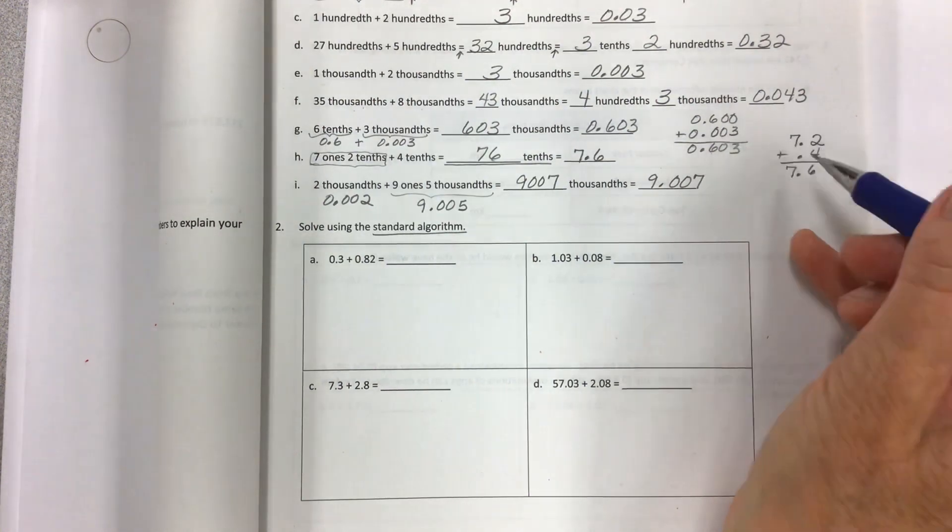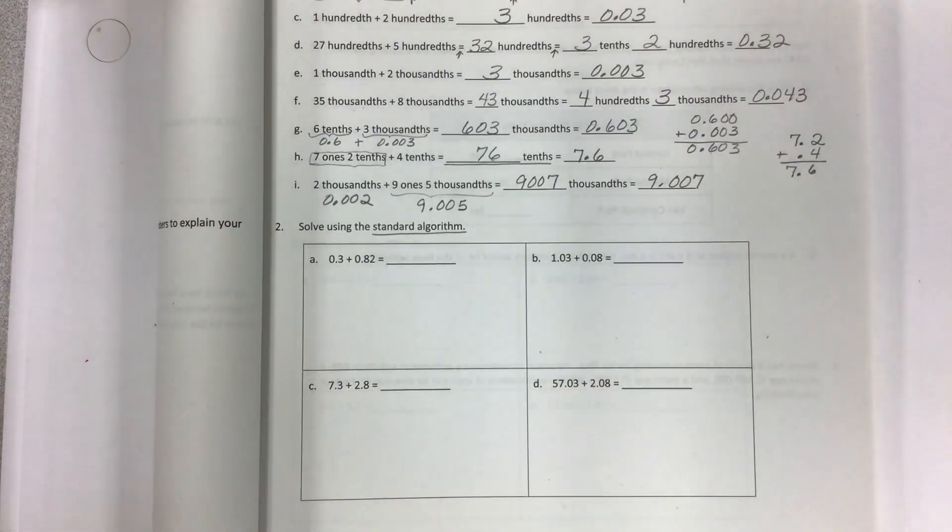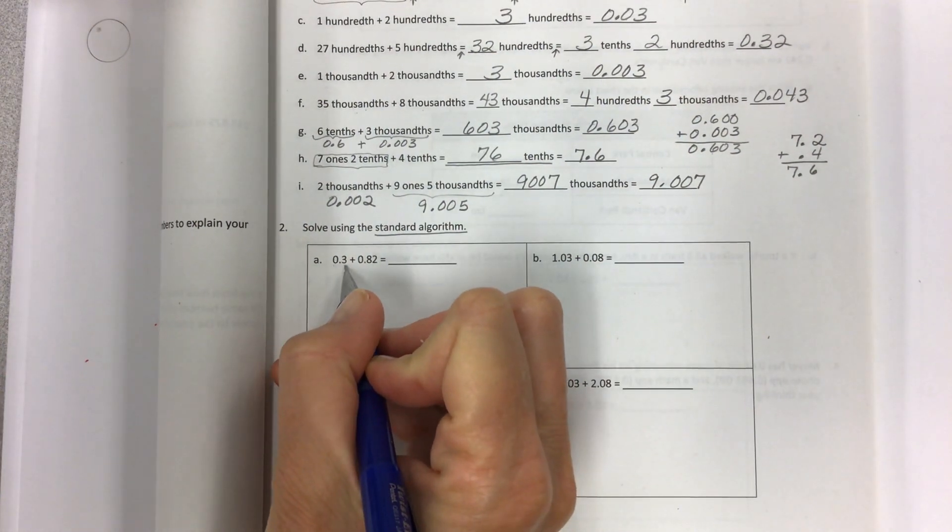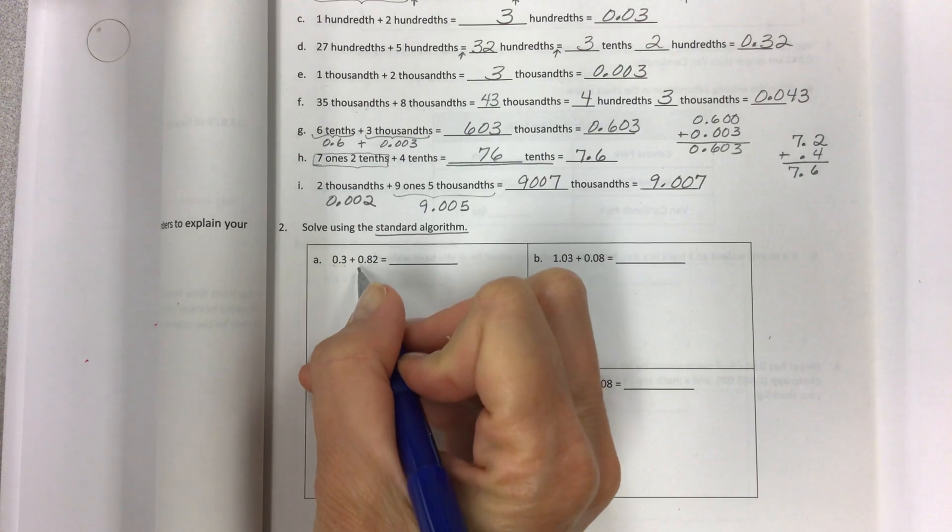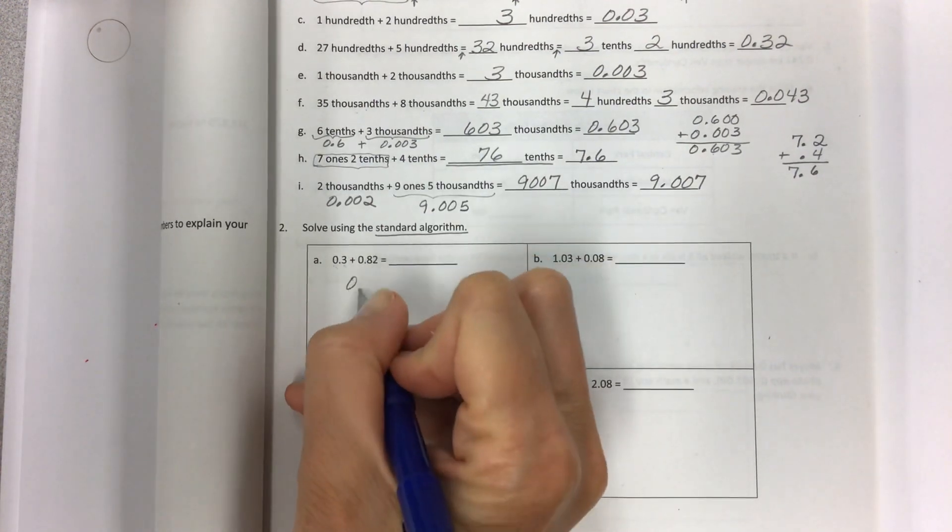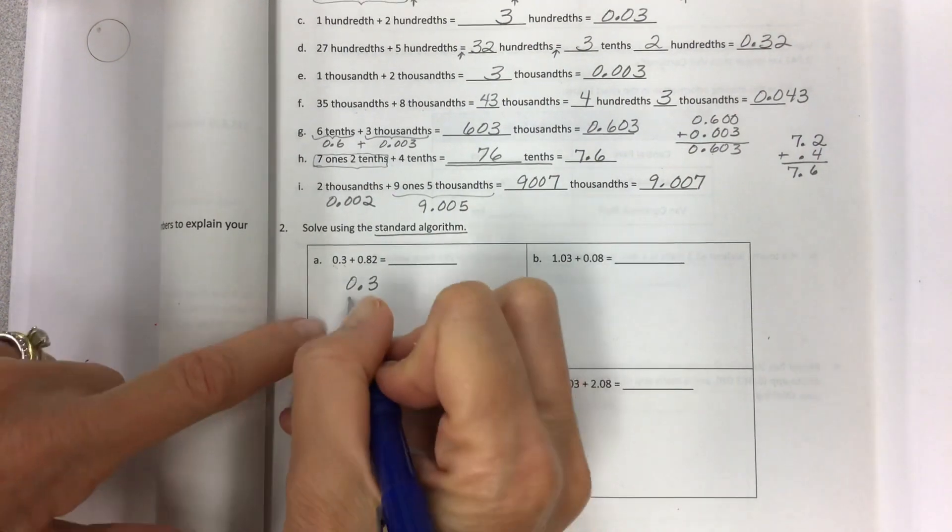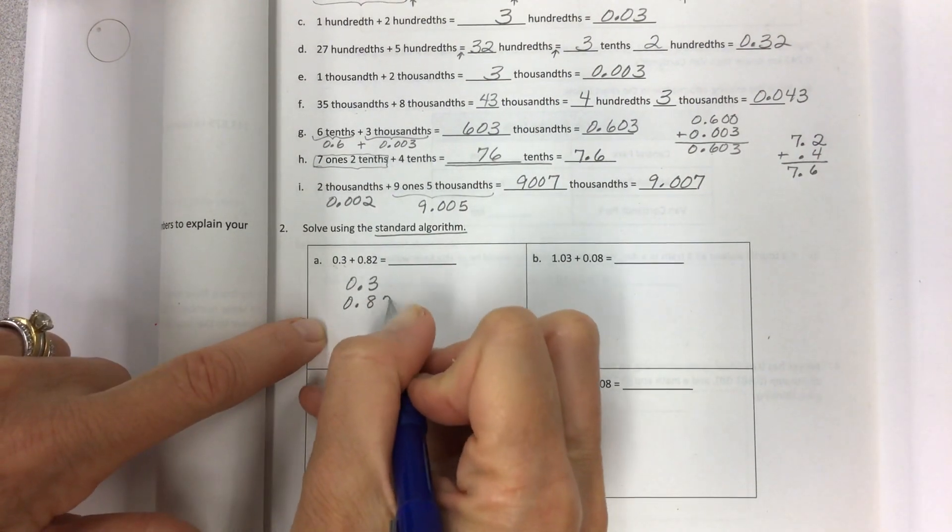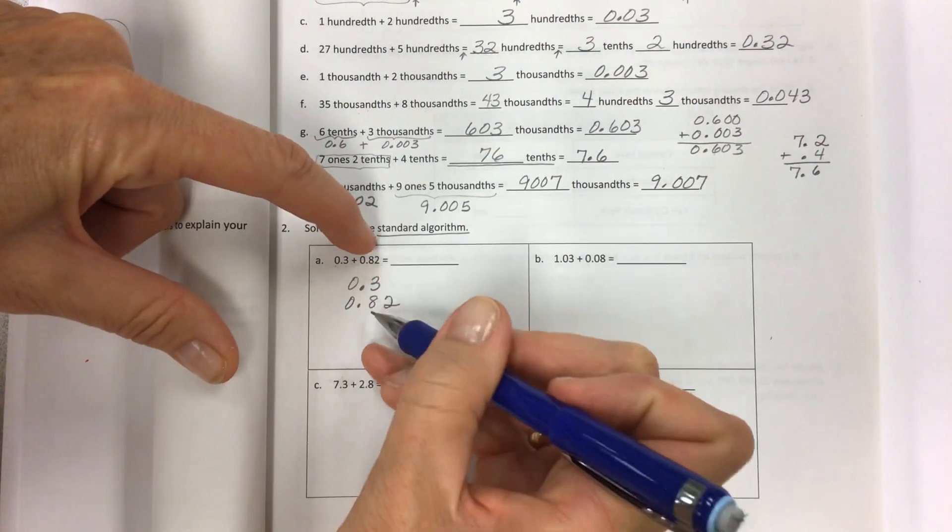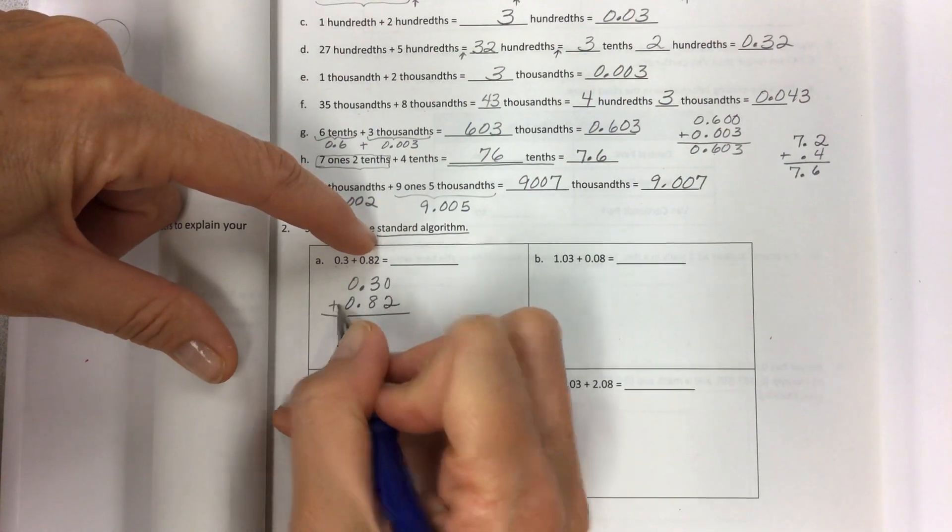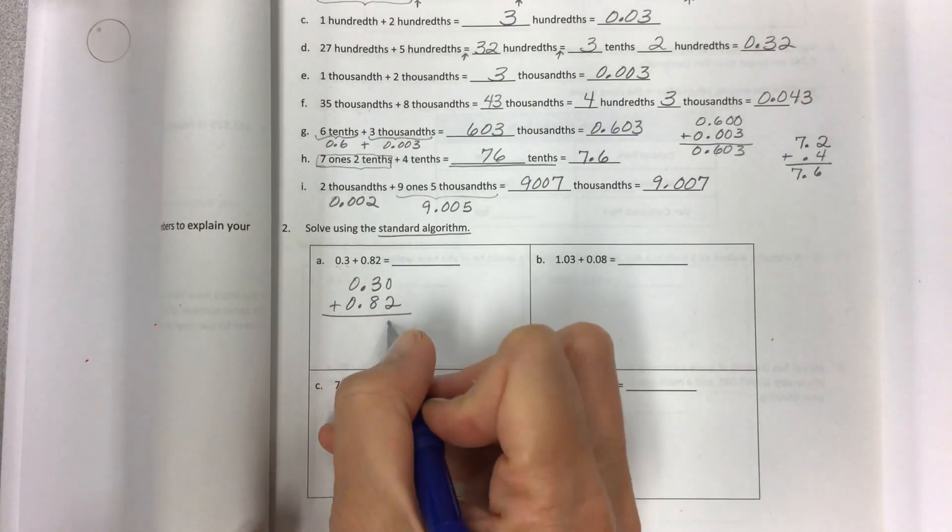The standard algorithm is lining everything up according to where the decimal is. They may have two digits here, but be careful that you line them up by where the decimal is. If you're going to place the 3 in the tenths place, then make sure you have the 8 in the tenths place as well. Then square that out by putting a zero if that helps you.